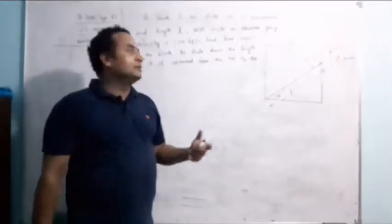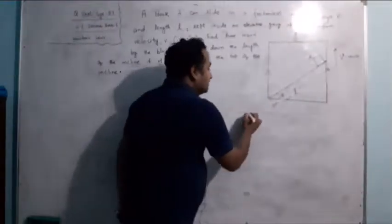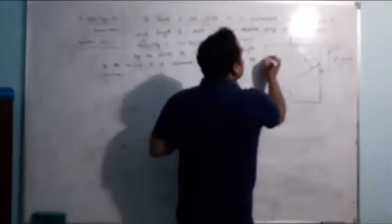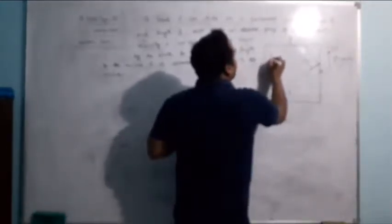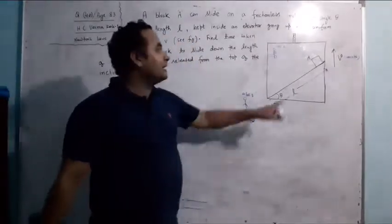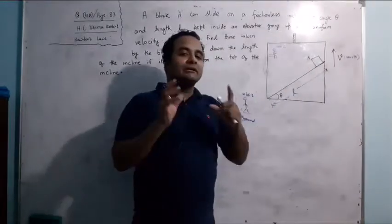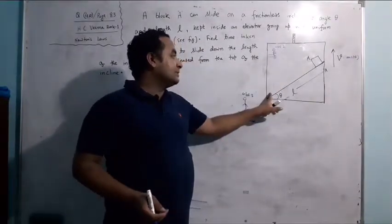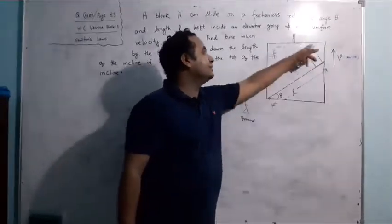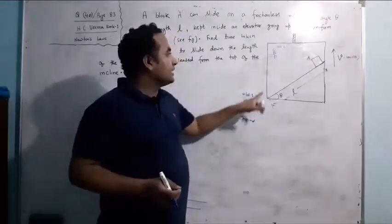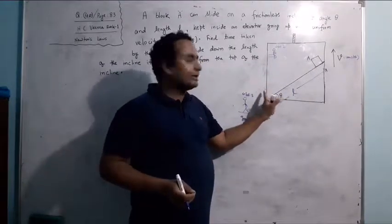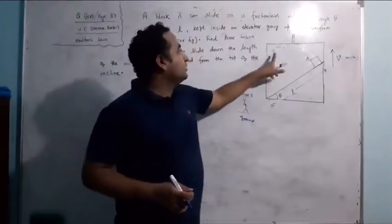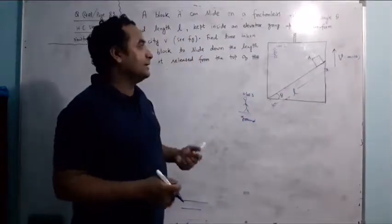The time is independent of the frame of the observer. One observer is on the ground (Observer 1) and another observer is sitting inside the elevator (Observer 2). Both will notice the same start event — when the block begins moving — and the same end event — when the block reaches the bottom. They will record the same time.